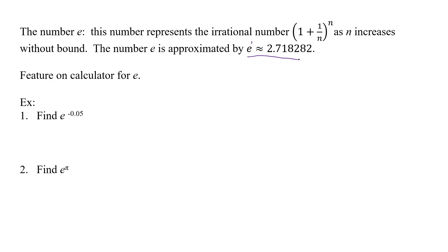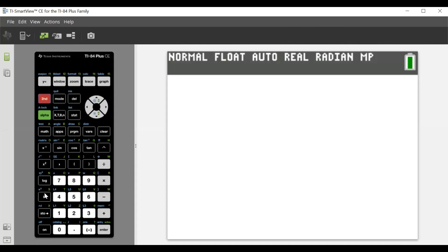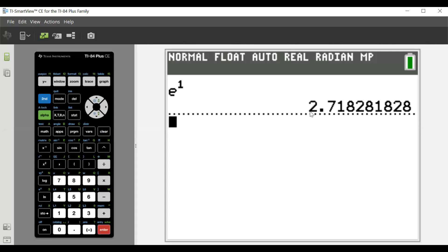Now we're going to plug in our calculator and see what we get as e to the 1st, but they also want us to find e^(-0.05) and e^π, so we'll do all three of those. We have to find e, well, that's going to be 2nd ln, and if we put a 1 in there, that's 2.718281828, and so on. That is what e to the 1st was.